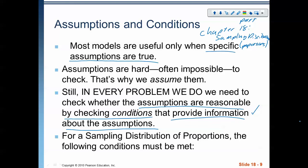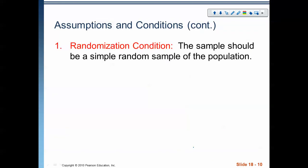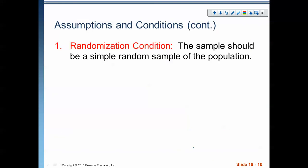So, for a sampling distribution of proportions, and this is key because for means it's different, for proportions the following conditions must be met. First of all, the sample should be a simple random sample of the population. So, what that means in terms of our AP Statistics land, somewhere in the problem stem, it should be stated that a random sample was taken. We need to see something that says a random sample was taken.